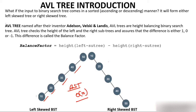Three individuals — A stands for Adelson, V is for Velsky, and L for Landis — they were the inventors of AVL tree. They saw the problem of BST and said it's the biggest problem, it's creating high complexity. So they made BST into AVL tree, giving BST a new name: AVL tree.